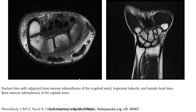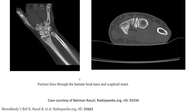This is MRI. Fracture line with subchondral bone marrow edema. Bruising of the scaphoid, trapezoid, and hamate hook base. And scaphoid fracture.